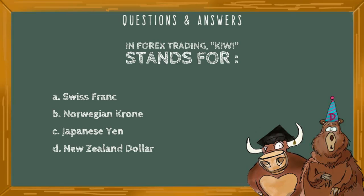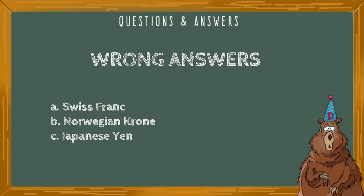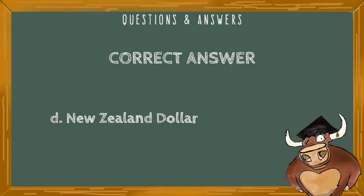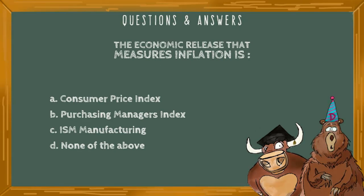In forex trading, 'Kiwi' stands for: A) Swiss franc, B) Norwegian Krona, C) Japanese yen, or D) New Zealand dollar. The wrong answers include A) Swiss franc, B) Norwegian Krona, and C) Japanese yen. The correct answer is D, the New Zealand dollar. This is because of the nickname for New Zealanders — Kiwis.